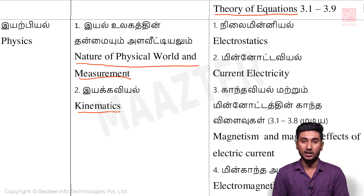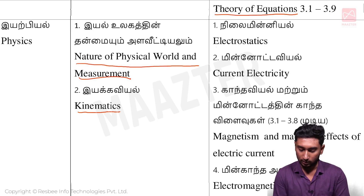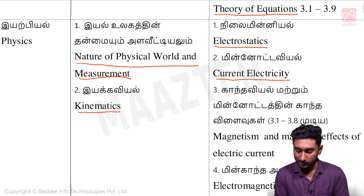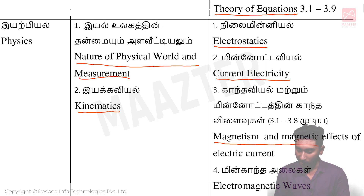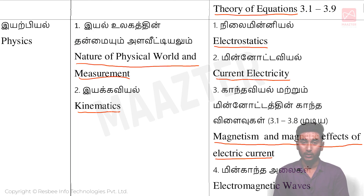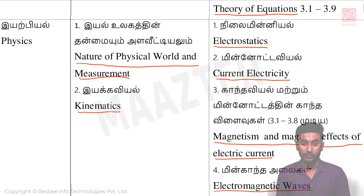12th standard Physics is Unit 1: Electrostatics. Unit 2: Current Electricity. Unit 3: Magnetism and Magnetic Effects of Electric Current. Then Unit 4: Electromagnetic Waves.